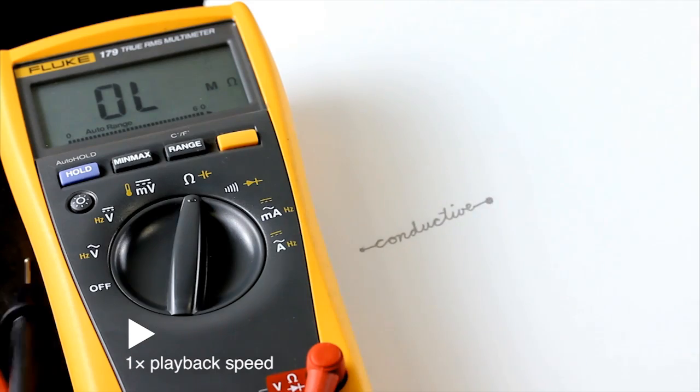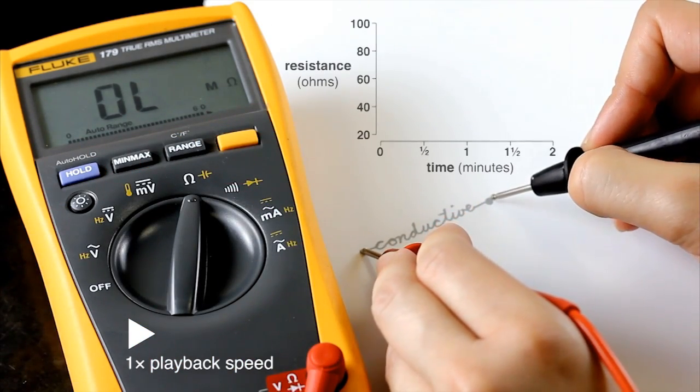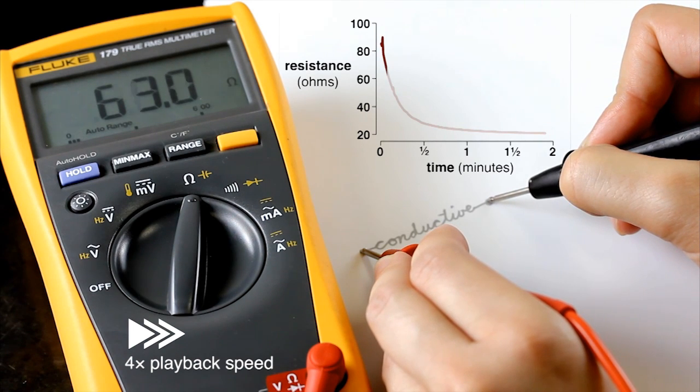The ink is composed of silver microparticles, water, and a cellulose binder. During writing, the silver particles form a conductive network on the top surface of the paper.